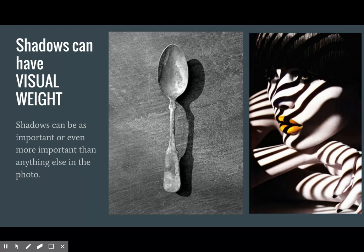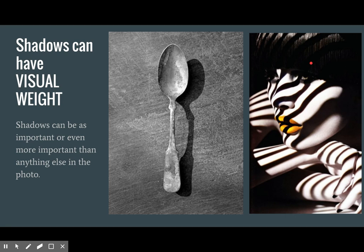However, in a photograph shadows can have visual weight. They can become an object and be just as important as any other object. They can even give us more information about what's going on. So if we look at the shadow of the spoon, it's giving us the information that this spoon in the middle is rounded. And over here these shadows have just as much visual weight, are just as important as the woman, and they provide repetition in line and make the image much more interesting.